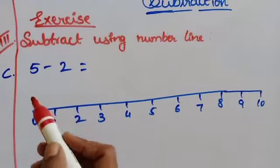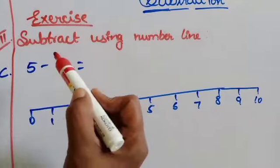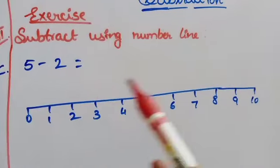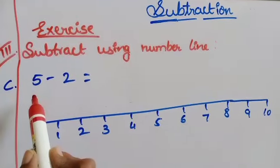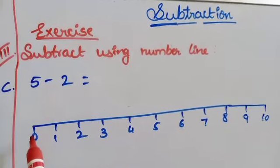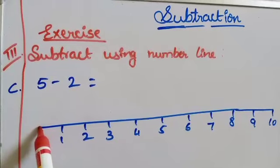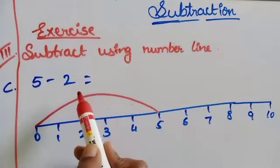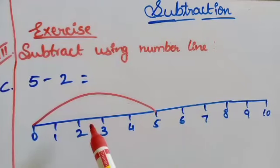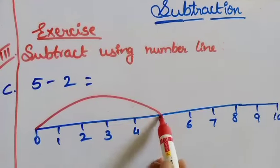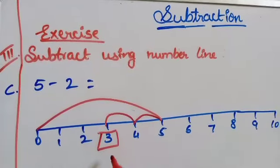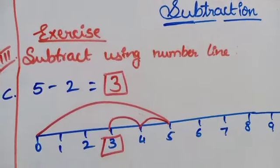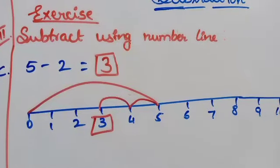The next one is 5 minus 2. We draw a line and number it 0 to 10. The first number is 5, so keep your pencil on 0 and jump to 5. The second number is 2, so from 5 we come back 2 steps backward: 1, 2. The answer is 3. So 5 minus 2 is equal to 3. It is very easy — don't get confused.